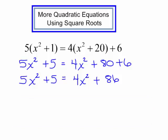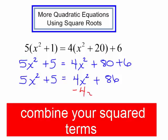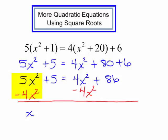I do have x squareds, so I know this is a quadratic equation. I do not have any variables to the first, so I can solve this using the square root property. Let's combine our squared terms — I will do this by subtracting 4x squared from each side. 5x squared minus 4x squared is just x squared. In order to isolate the squared term, I will need to subtract 5 from both sides.